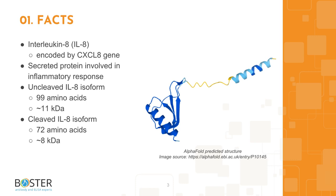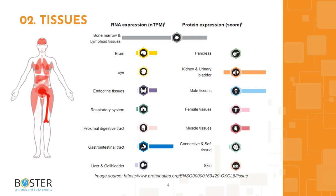Topic two: where is IL-8 expressed? High levels of IL-8 are found in the bone marrow and lymphoid tissues. IL-8 is also expressed in the kidney, urinary bladder, gastrointestinal tract, as well as male and female tissues. Interleukin 8 is secreted from multiple immune cells in response to stimuli such as an infection. You can find more information on proteinatlas.org to check out which cell lines express IL-8 and which ones don't — this information will come in handy when designing positive and negative controls for western blot and immunohistochemistry.